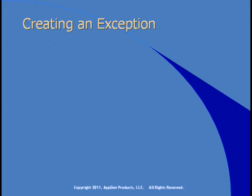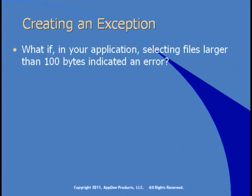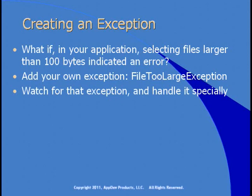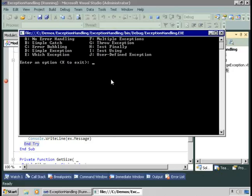We saw earlier that the .NET framework provides a variety of exception classes and you can catch exceptions of those types. But you might want to create your own exception. For example, in an application where selecting files larger than 100 bytes is an error, you want to throw an exception if the user does this. This is not built into the framework — there is no FileTooLargeException in the .NET framework — but you can create one yourself and then trap for that exception and handle it as needed. Let's go see a demo of how you do this.